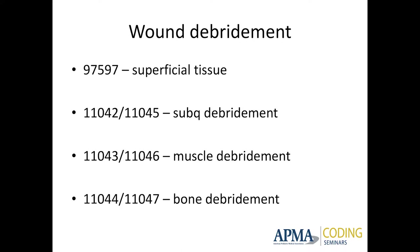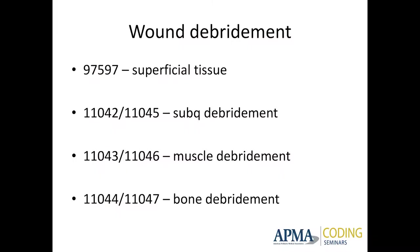If I'm doing subcutaneous tissue debridement, it includes the skin above and the subcutaneous tissue: 11042 for the first 25 square centimeters, 11045 for each additional 25. 11043 is debriding muscle or tendon — if I look at the wound and see muscle and tendon but I'm not actually debriding it, I use the subcutaneous code. If I'm debriding muscle or tendon, I use 11043, which includes everything above it. These codes talk about excision of tissue from the wound, so if you're not excising it out, you're not debriding the wound under these categories.